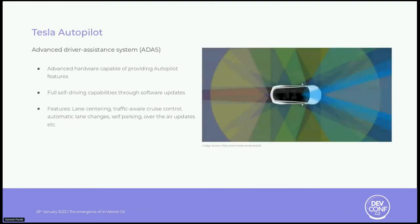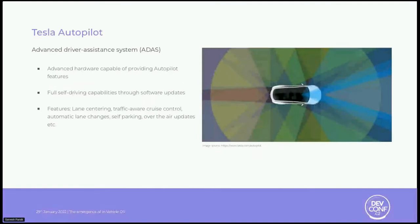Then we have Tesla Autopilot, a suite of ADAS features offered by Tesla. Its features include lane centering, traffic-aware cruise control, automatic lane changes, semi-autonomous navigation on limited access freeways, self-parking, and the ability to summon the car from a garage or parking spot. One key difference between Tesla's Autopilot and Waymo or Zoox is that in all of Tesla's features, the driver remains responsible and the car requires constant supervision. This software was developed to reduce accidents caused by driver negligence and fatigue.